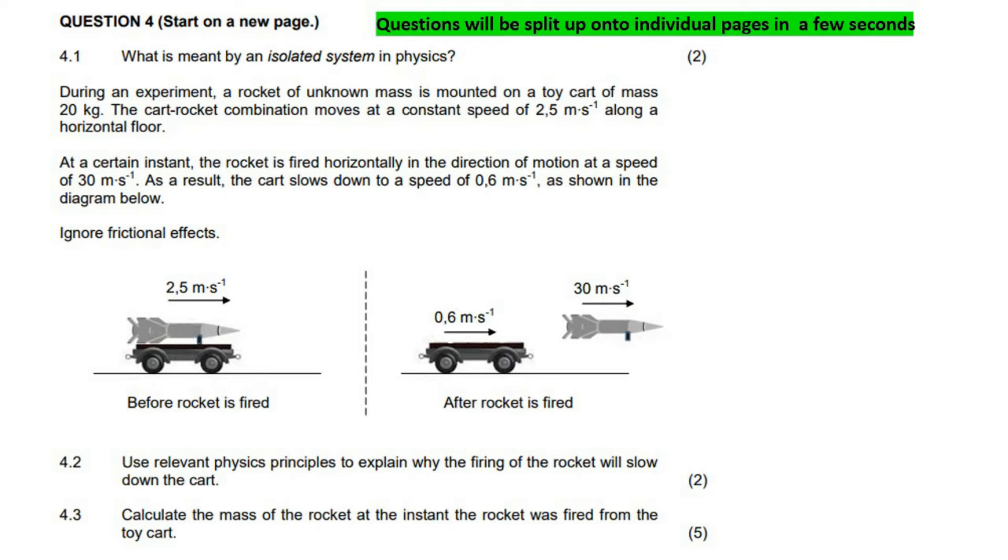Okay, so the definition of an isolated system is a system, or let's say an isolated, think about the word isolated, it means it's by itself. Okay, so an isolated system is one in which no external forces are present. Okay, so I'll give you some time just to check that out, now let's quickly go read over here.